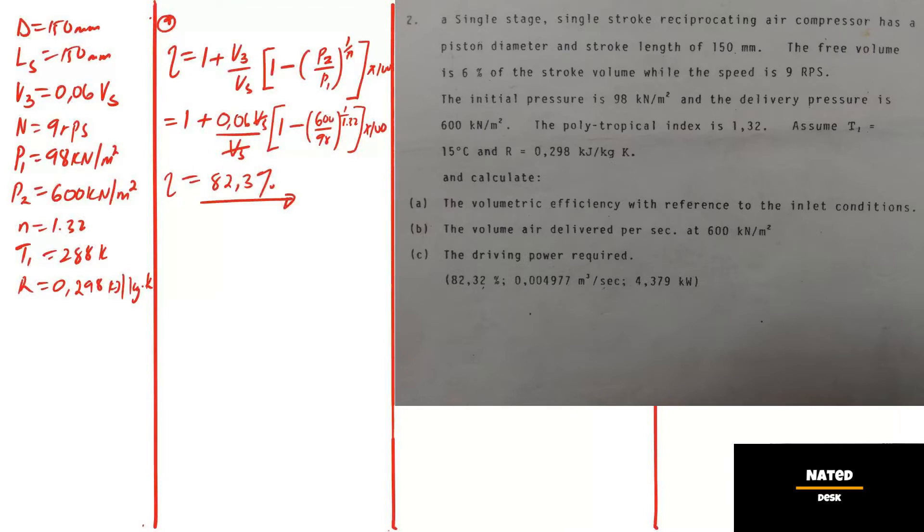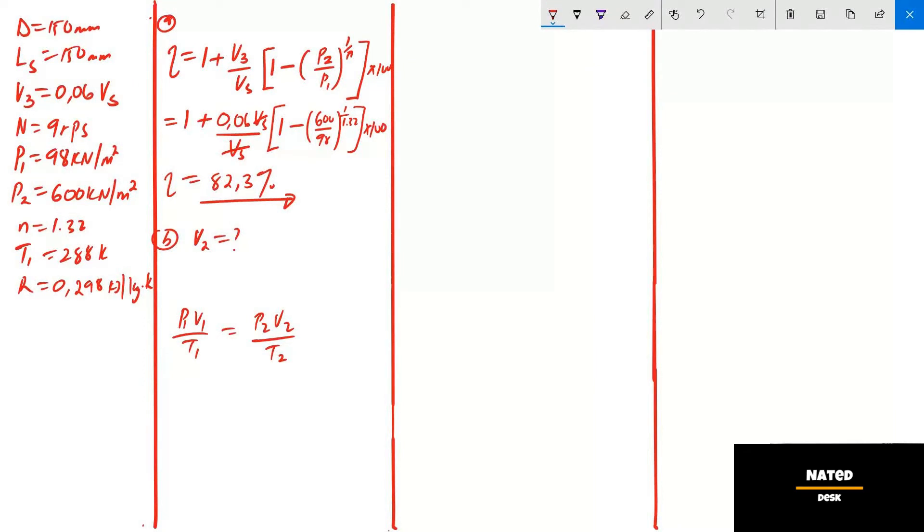Part B: The question reads, calculate the volume air delivered per second at 600. This is V2. To calculate V2, we will use the combination of Charles and Boyle's law at inlet, which equals the air delivered at 2. Where there is V1, we must replace it with effective volume VE.